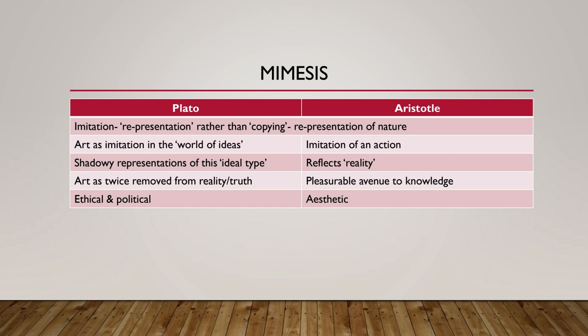Plato's disciple Aristotle differed from Plato on this view. He agrees that mimesis is representation of nature, but it is not imitation of idea — it is imitation of an action, something which reflects reality. For Plato, mimesis is ethical and political, whereas for Aristotle it is aesthetic.